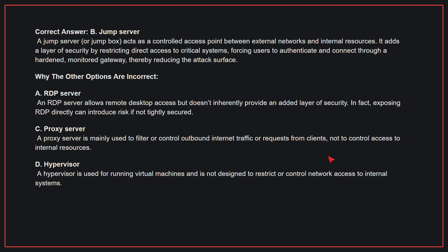Why the other options are incorrect: A. An RDP server allows remote desktop access but doesn't inherently provide an added layer of security — exposing RDP directly can introduce risk if not tightly secured. C. A proxy server is mainly used to filter or control outbound internet traffic, not to control access to internal resources. D. A hypervisor is used for running virtual machines and is not designed to restrict or control network access to internal systems. Therefore, the correct answer is B.